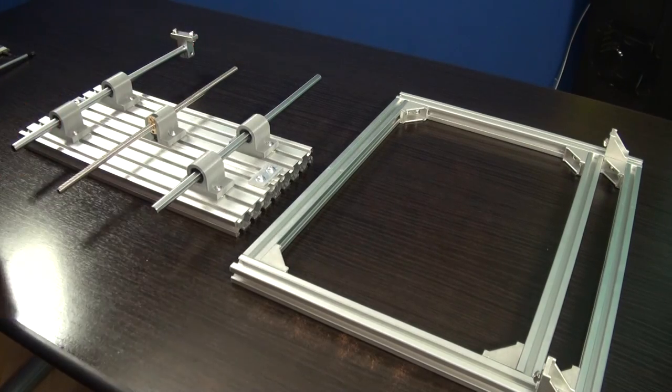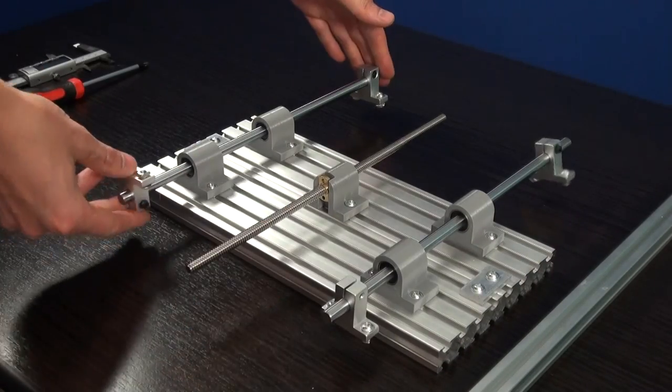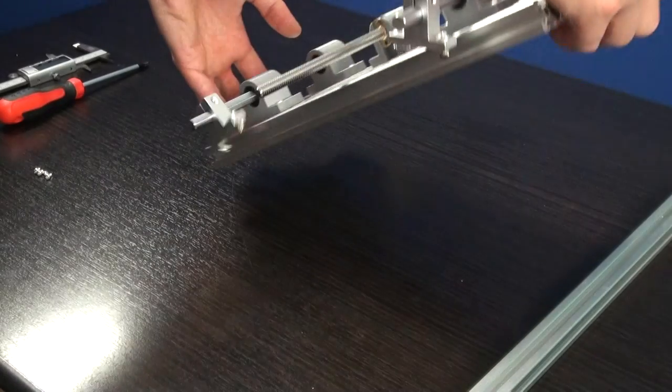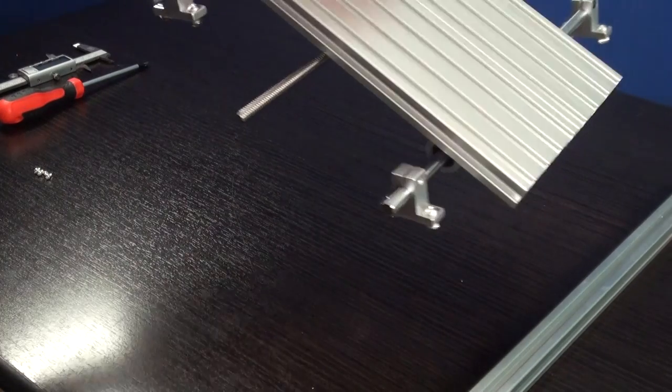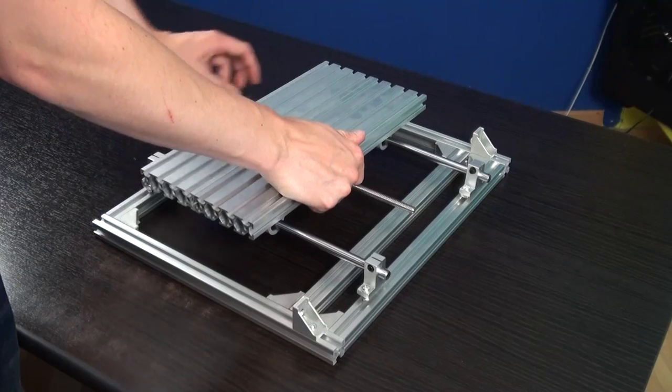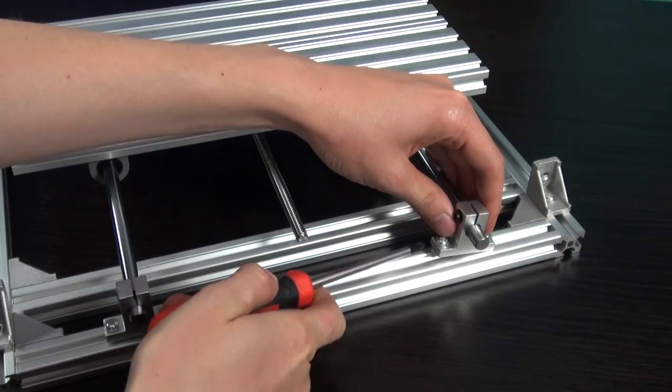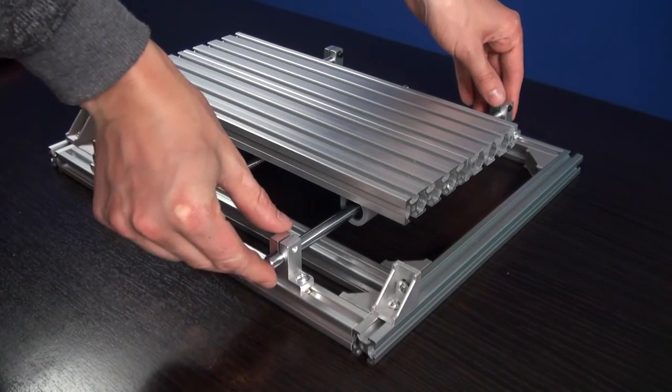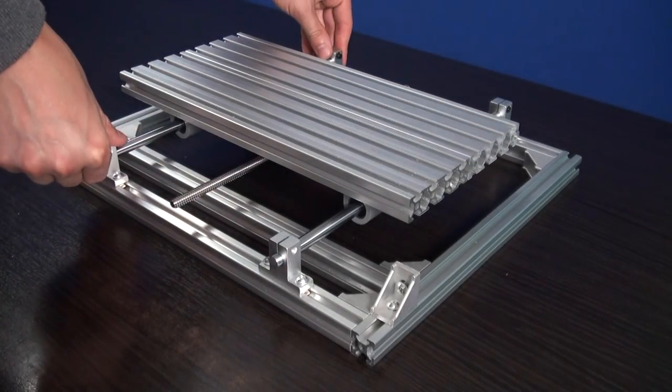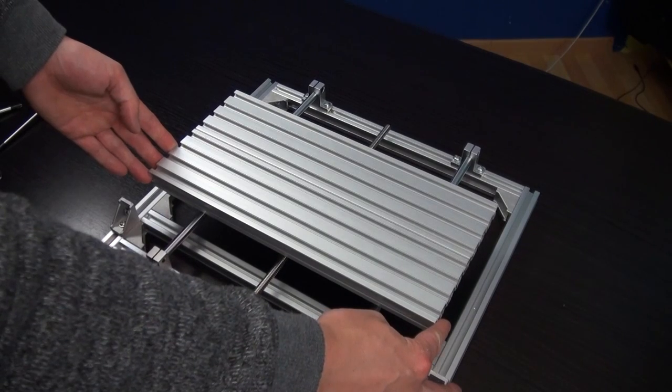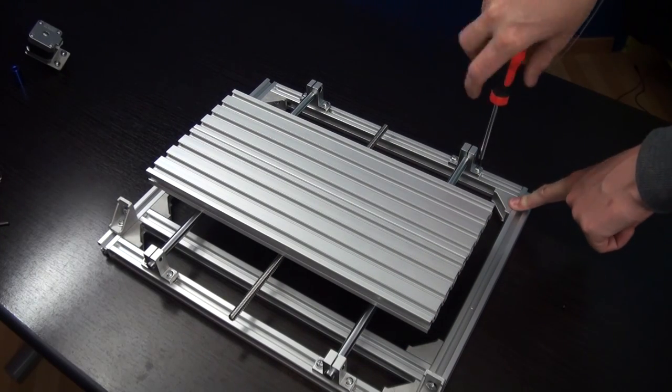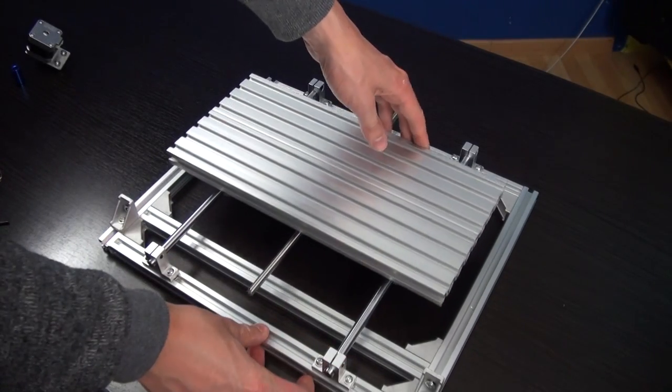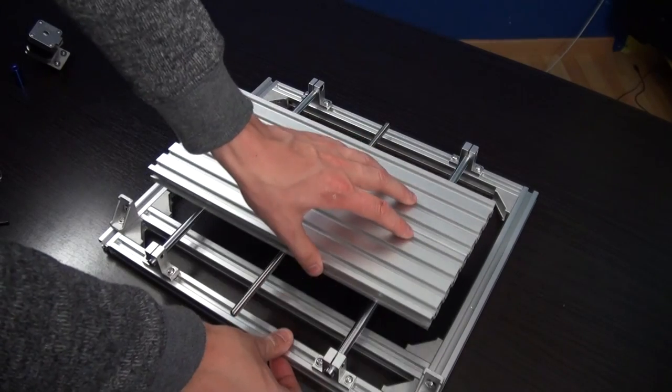Four support brackets are slid in the rails and the machine bed assembly is placed on frame number one. With a screwdriver the T-nuts can be rotated to let them fit in the rails. When you make sure that the machine bed assembly is in the middle of the frame, the first support bracket can be tightened. Move the bed back and forth a couple of times and secure the second bracket from the same support rail.